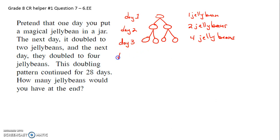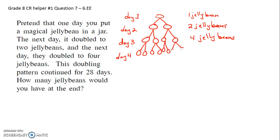So let's say we moved on to day four. Day four, these magical jelly beans just keep doubling. My problem is I would be eating them, and then they'd either be gone or doubling inside my belly. Day four: one, two, three, four, five, six, seven, eight. We're up to eight jelly beans after day four.